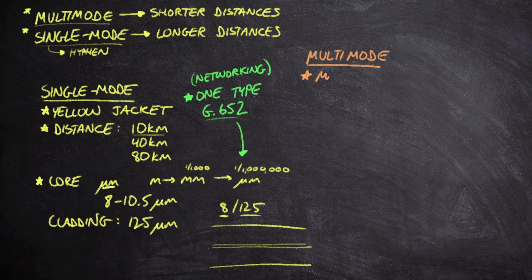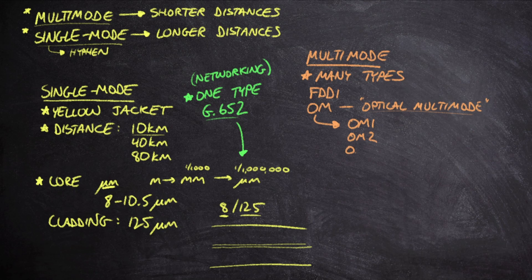Unfortunately, multimode has many types. Off the top of my head, I can rattle off six different types of multimode fiber. We have FDDI grade fiber on the low end, but we also have what we call OM graded fiber. OM stands for optical multimode. These OM grades give us numbers: OM1, OM2, OM3, OM4, and OM5.